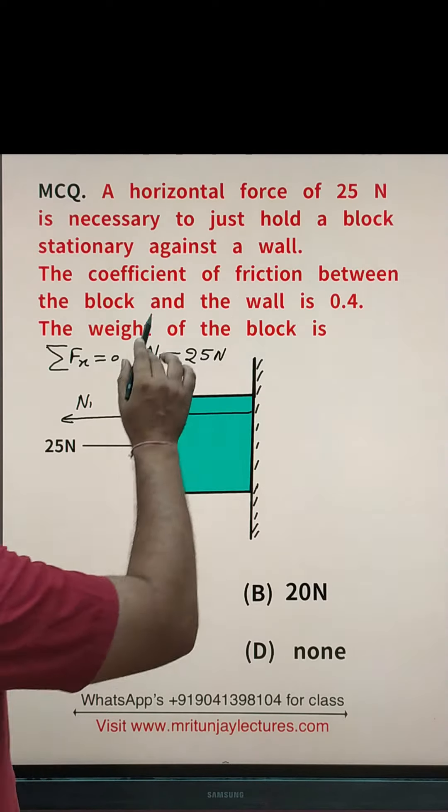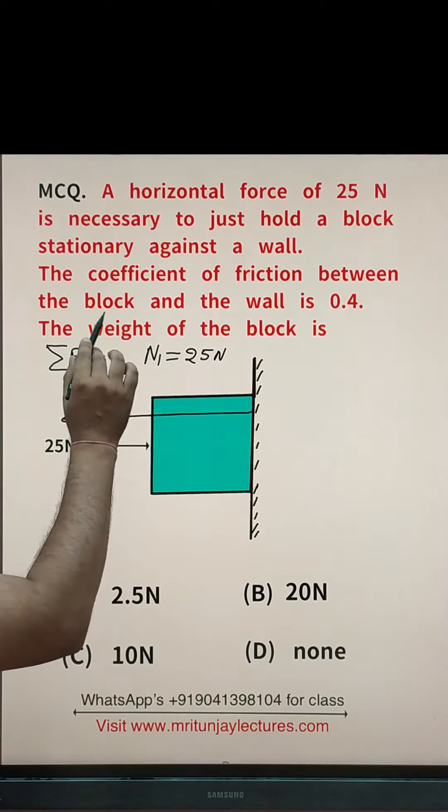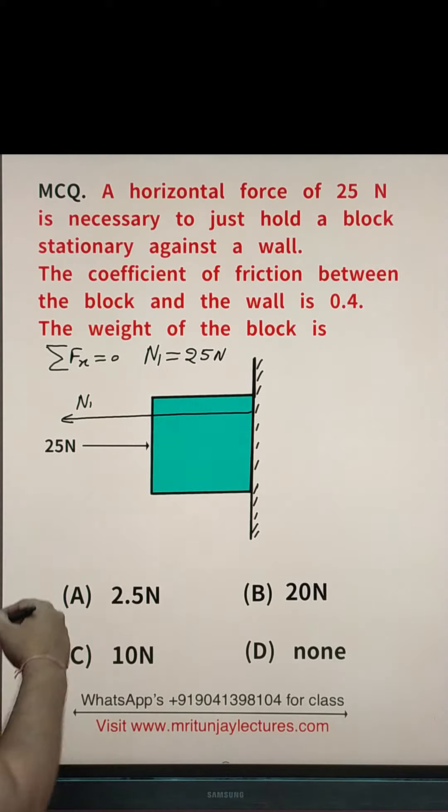After that, the coefficient of friction between the block and wall is 0.4.